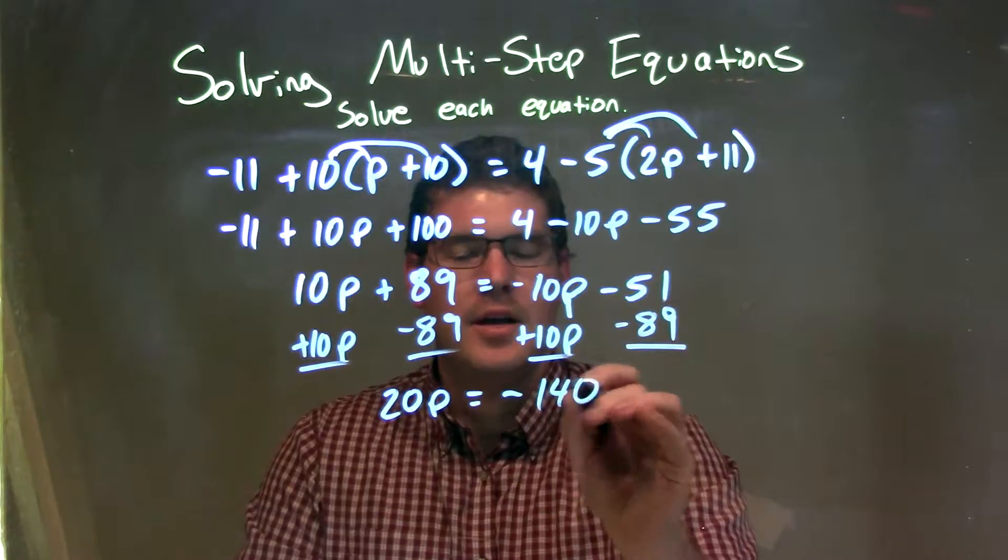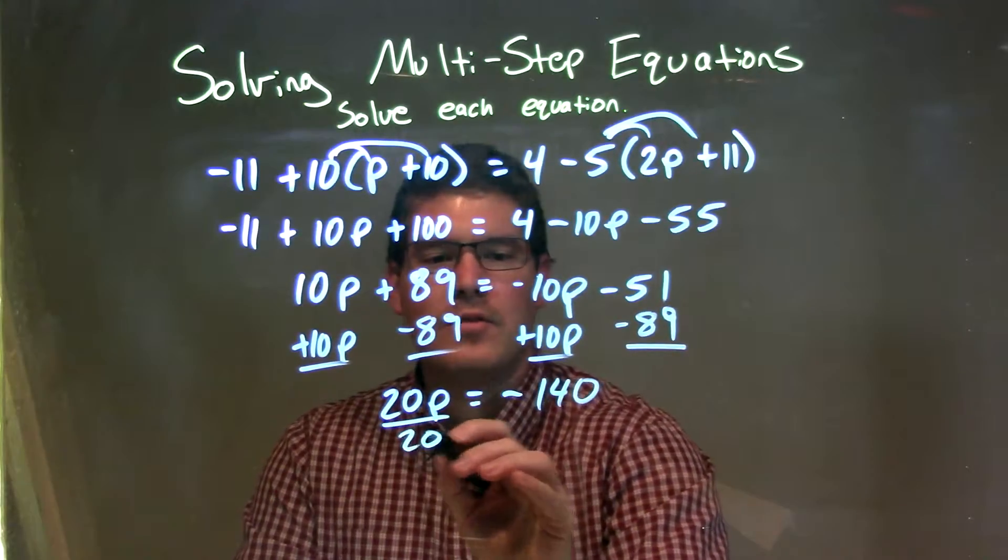So negative 140 here. Now we're going to divide both sides by 20 to get p by itself.